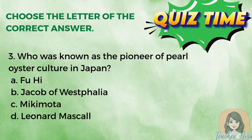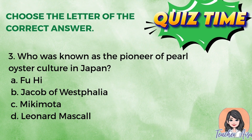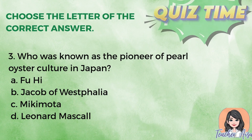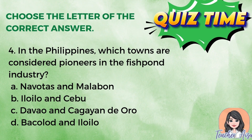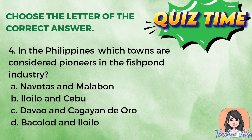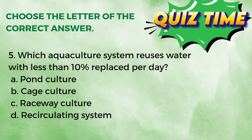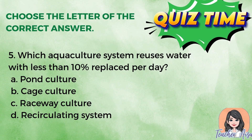Number three: Who was known as the pioneer of pearl oyster culture in Japan? A) Fuhai; B) Jacob of Westphalia; C) Mikimoto; D) Leonard Maskell. Number four: In the Philippines, which towns are considered pioneers in the fishpond industry? A) Nabitas and Malabon; B) Iloilo and Cebu; C) Davao and Cagayan de Oro; D) Bacolod and Iloilo. Number five: Which aquaculture system reuses water with less than 10 percent replaced per day? A) Pond culture; B) Cage culture; C) Raceway culture; D) Recirculating System.